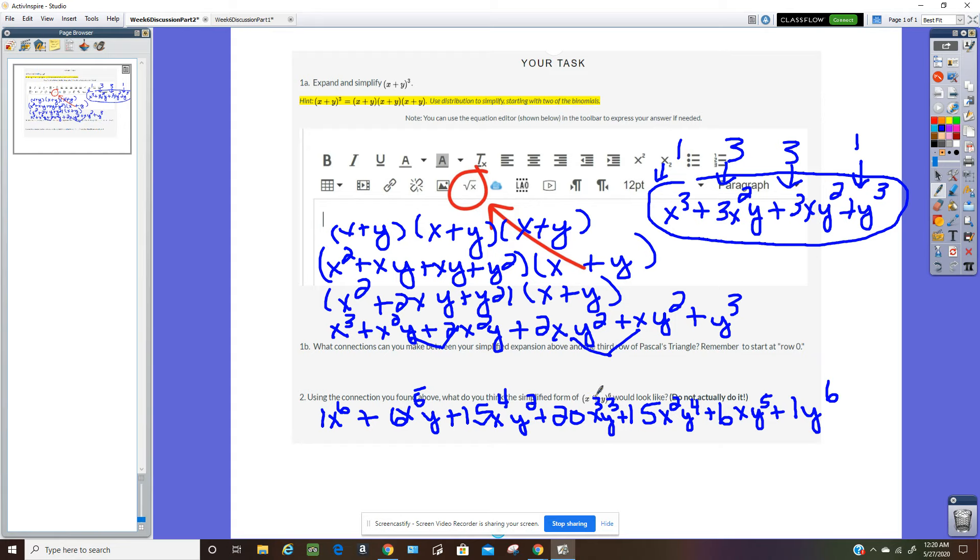The coefficient of x is 1. The coefficient of y is 1. I just have Pascal's triangle row 6. Actually, the 7th row. But if I start with 0, it's row 6. 1, 6, 15, 20, 15, 6, 1. Those are my coefficients.